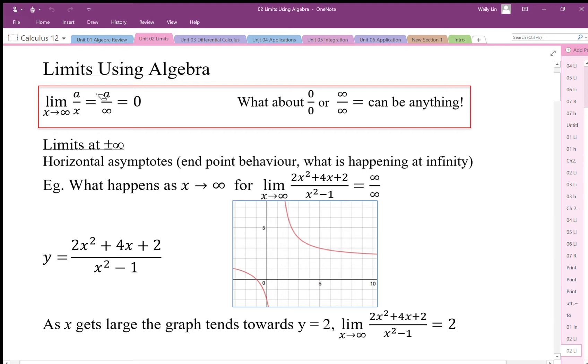When the limit of any number divided by infinity is zero. The other idea is if we get 0/0 or ∞/∞, those can be anything - could equal zero, could be equal to one, could be equal to infinity, we don't know.